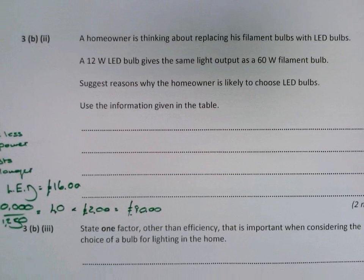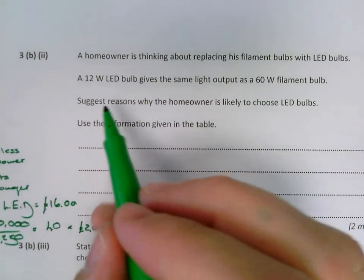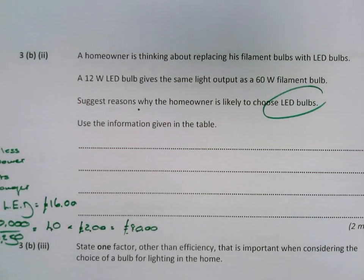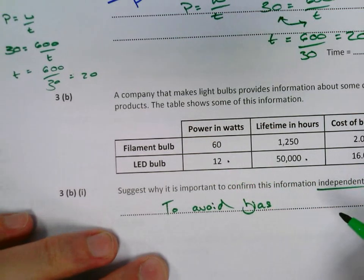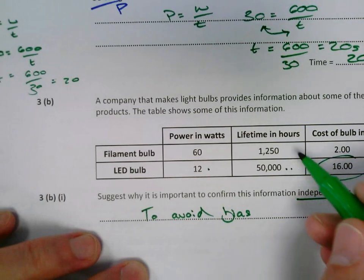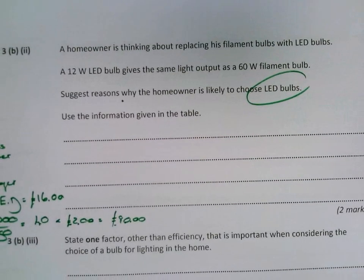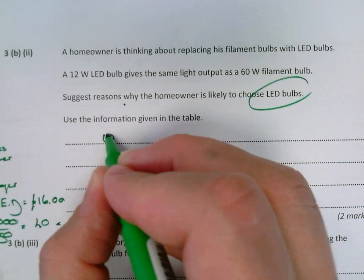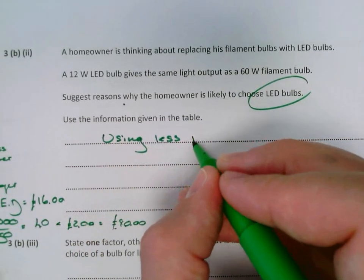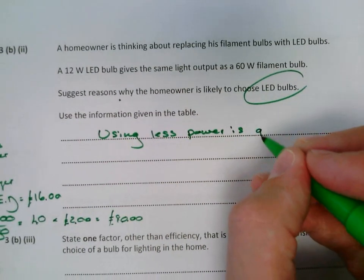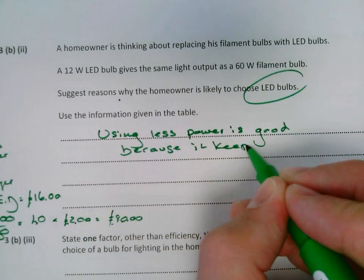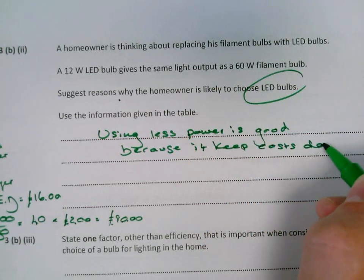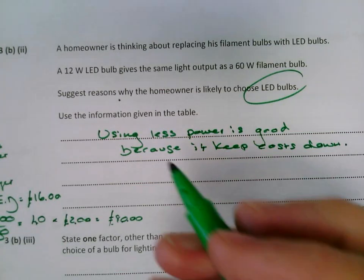3B part 2. It wants you to suggest reasons why a homeowner is more likely to choose the LED bulbs. Let's just have another quick look at this table. See the LEDs, they are less powerful, but they have a much greater lifetime. They are more expensive, but this lifetime makes up for that. I'm going to show you how. Yes they are less powerful, but using less power is good because it keeps costs down. And then you can say that it lasts longer as well.